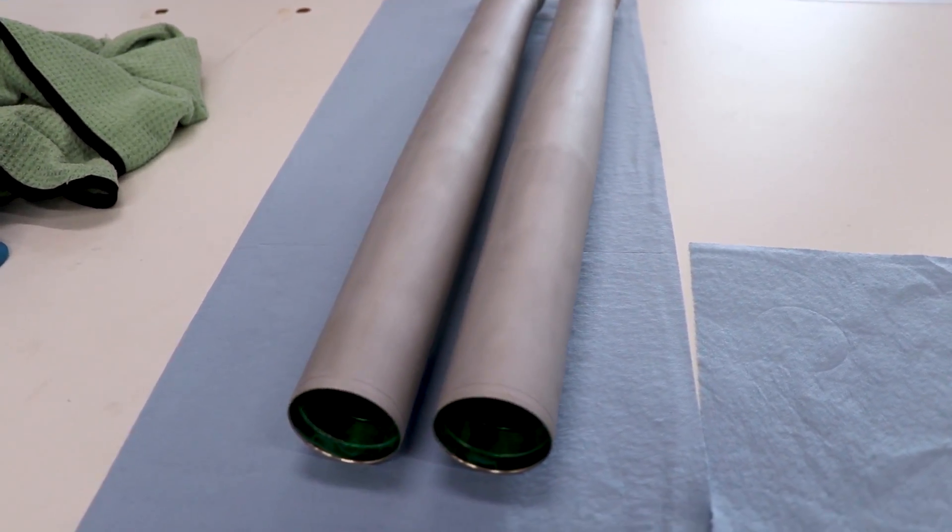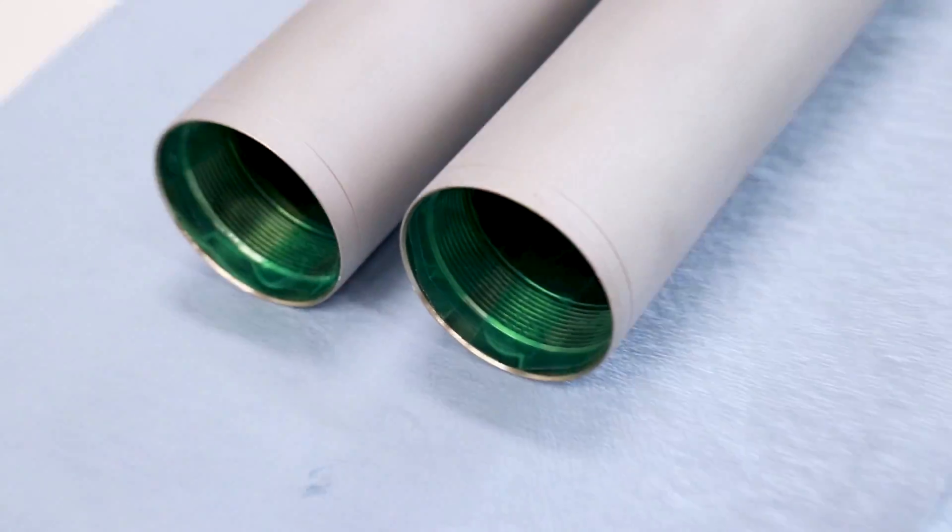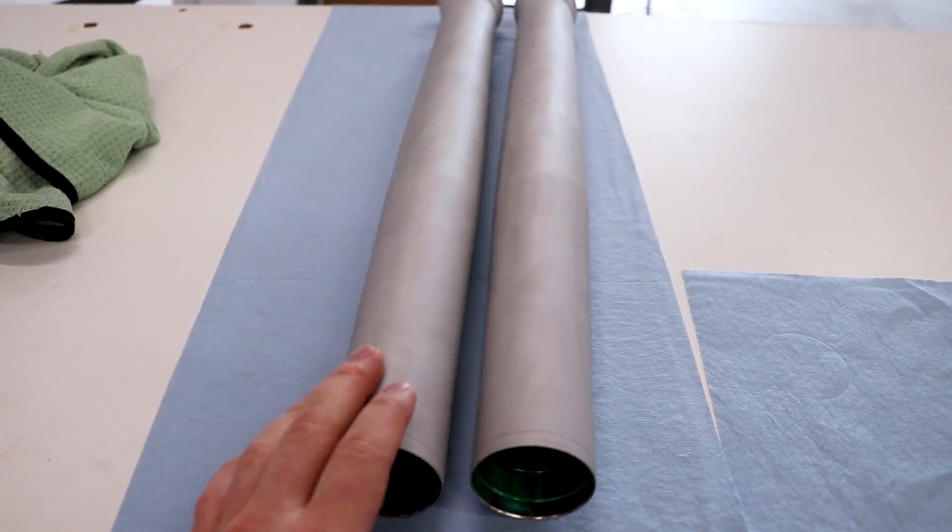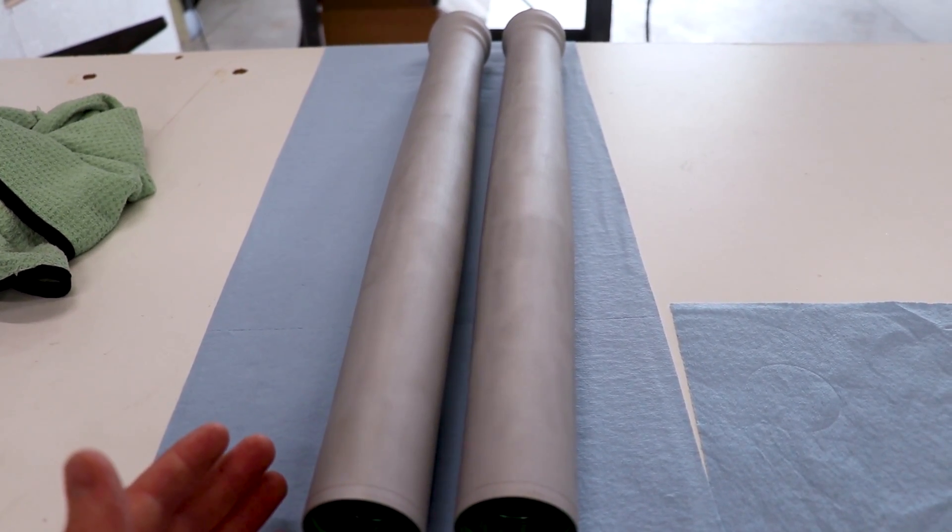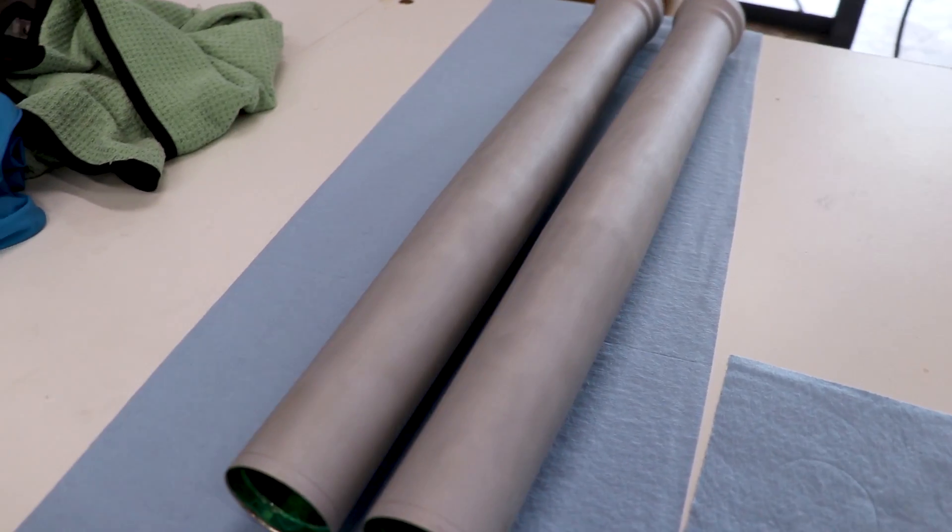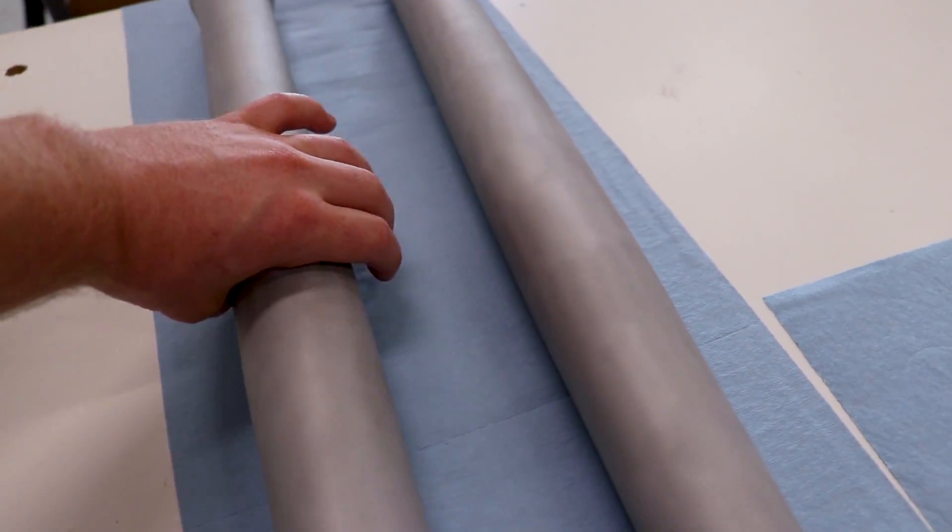All right, I've got the fork tubes all masked off inside. Definitely do not want to get any Cerakote inside of there. Now I've been contemplating on the color to go with on these tubes. It's between a silver or like a titanium color or a black. So this is kind of like silver, it's more like a gray. But let's see how it would look on the bike.